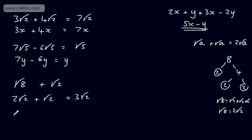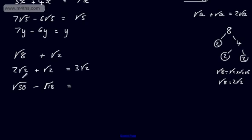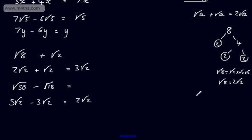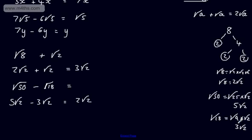Let's look at another one: root 50 minus root 18. At the moment it looks a complete mess, but let's simplify. Root 50 is the root of 25 times root 2, so we write this as 5 root 2. Root 18 is 9 times 2, so we write this as 3 root 2. So 5 root 2 minus 3 root 2 gives us 2 root 2. The root of 50 is the same as root 25 times root 2, giving 5 root 2. The root of 18 is root 9 times root 2, and root 9 is 3, so we get 3 root 2.